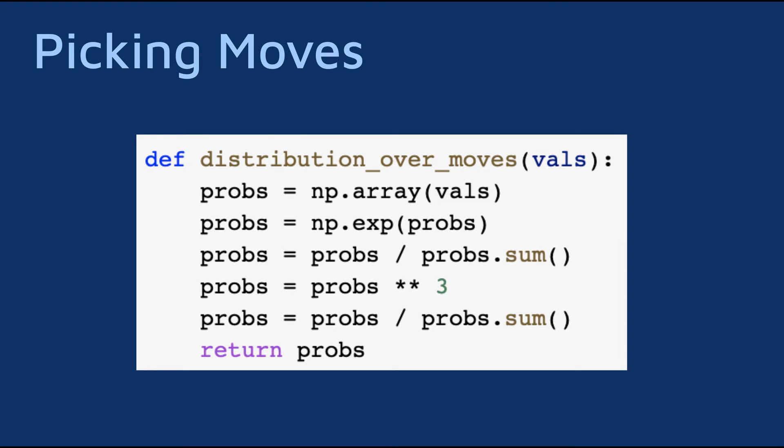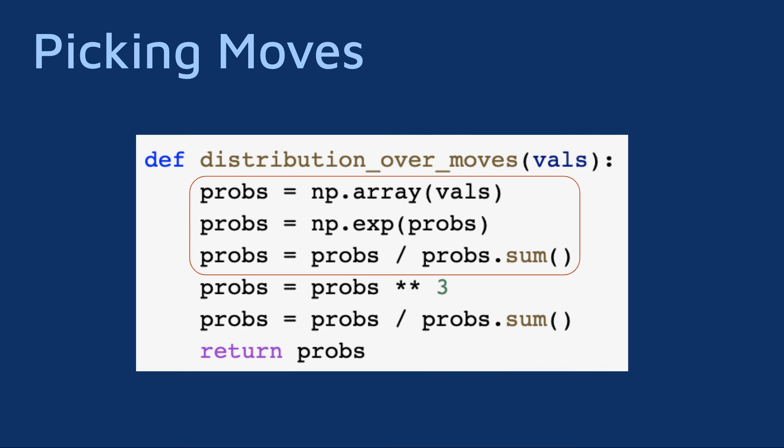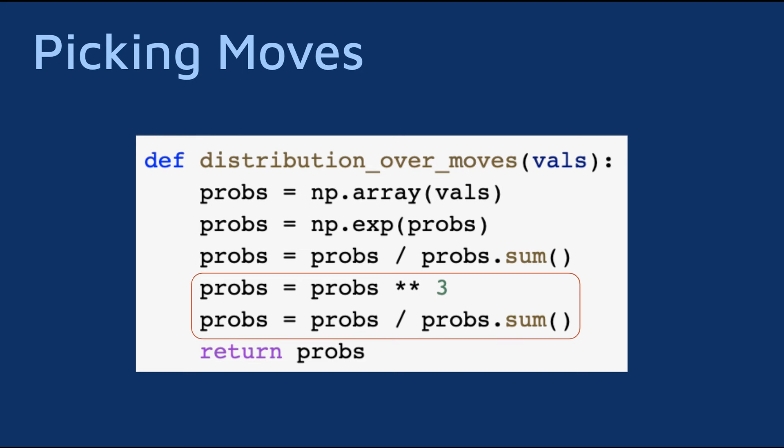Another useful function takes a list of numbers and converts them to a probability distribution. We first apply the softmax function, which gives us a distribution, but then we take the distribution to the power of 3 and normalize it again. This increases the gap between high and low probabilities, so bad moves are chosen less often, while still maintaining some randomness in the process.